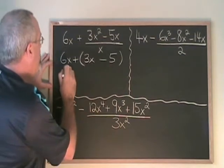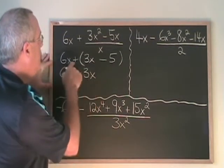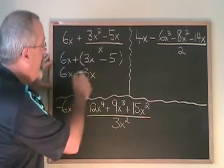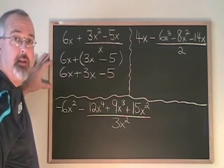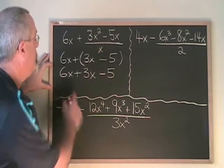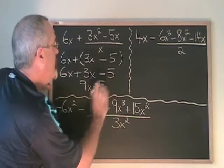I remove the bracket as a separate step, but this time, because there was a plus sign before it, nothing is changing on the inside. And then I combine my similar terms and give my final answer. 6x plus 3x is 9x minus 5.